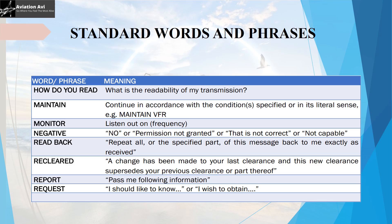'Monitor' is used when the transmitting station wants the receiving station to maintain a listening watch on a particular frequency. 'Negative' means unknown, permission is not granted, or the transmission is not correct or not applicable. 'Read back' is used when the message must be repeated back to ensure correctness. 'Re-cleared' is used when a change has been made and a new clearance supersedes the previous one. 'Report' means pass the following information — for example, 'vacate runway via taxiway Echo, report vacated.'